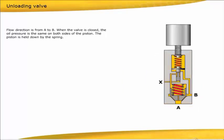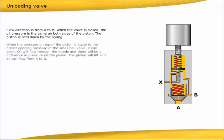When the valve is closed, the oil pressure is the same on both sides of the piston. The piston is held down by the spring. When the pressure on top of the piston is equal to the preset opening pressure of the small ball valve, it will open. Oil will flow through the nozzle, and there will be a difference in pressure on the piston. The piston will lift.